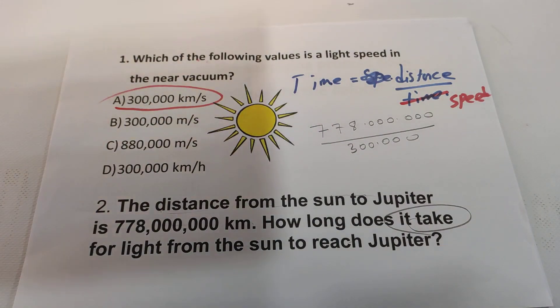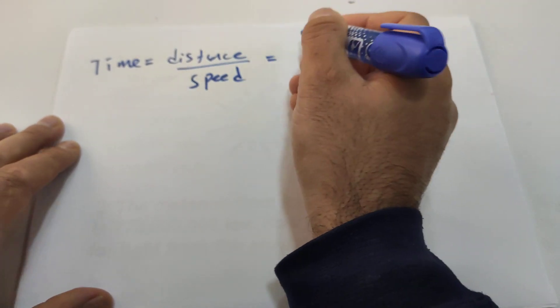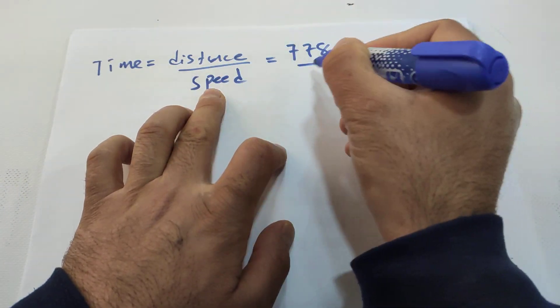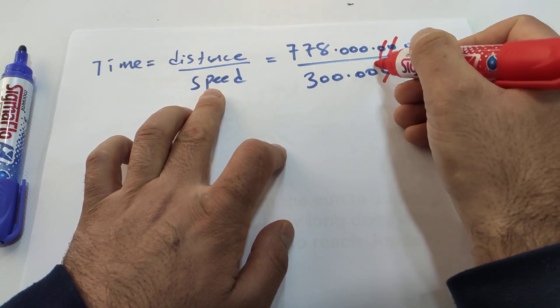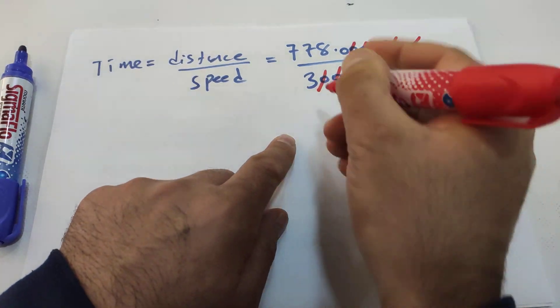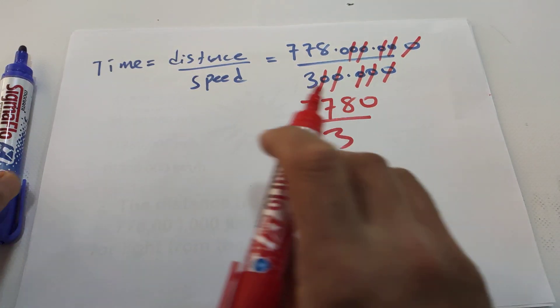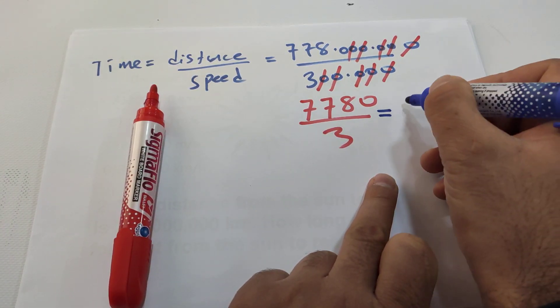Let us apply our formula: time equals distance over speed. Distance is 778 million kilometers, speed of light is 300,000 kilometers per second. Let us cancel zeros — 7,780 over 3 — and we get 2,593 seconds.